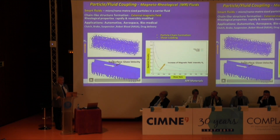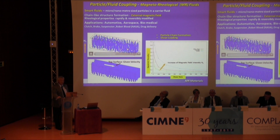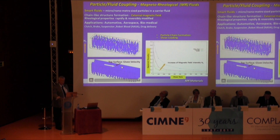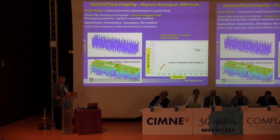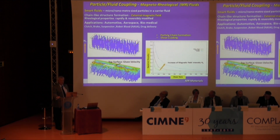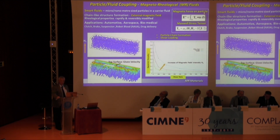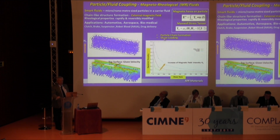Another example — magnetorheological fluids: particles in a carrier fluid with a magnetic field applied. The field lines up the particles in chains, affecting viscosity behavior. You can measure this by giving the top surface a given velocity and calculating the reactive force to compute viscosity. The only additional term needed is the magnetic forces on particles, obtained by integrating the normal component of the Maxwell stress tensor around the boundary of the particle.